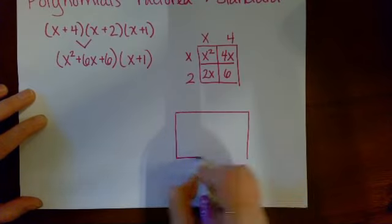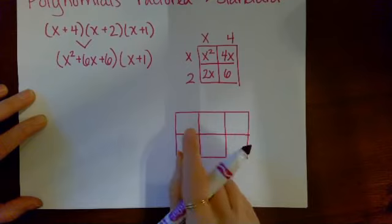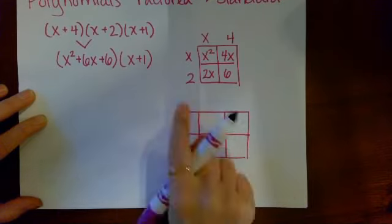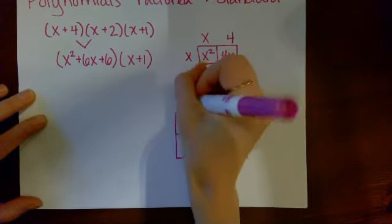I'm going to make three columns and two rows. When I do that, I'll put these three terms here, one per column, and these two terms here, one per row.